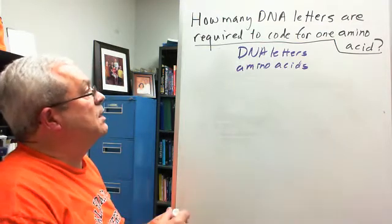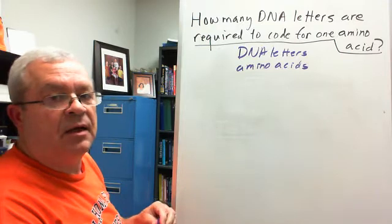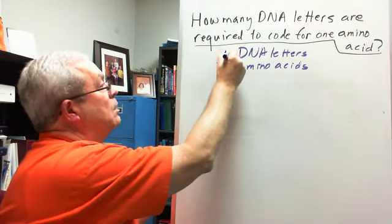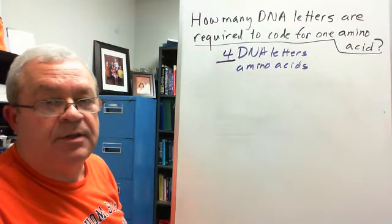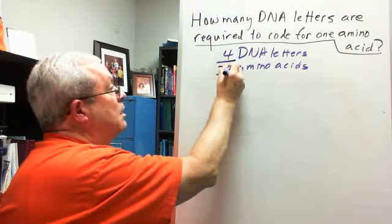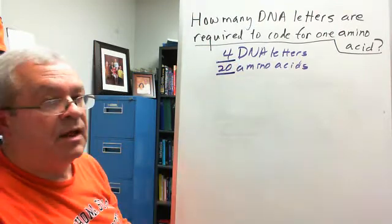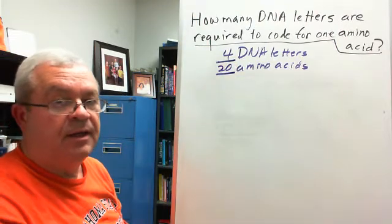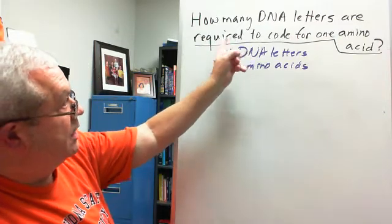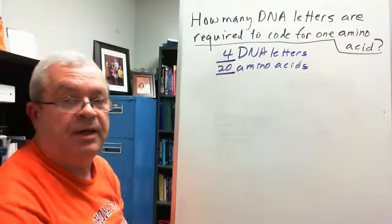And so what do we got here? How many DNA letters? How many different DNA letters? A whopping four. And how many different amino acids? Twenty. And so the DNA code involves four DNA letters coding for twenty different amino acids. So back to the question. How many DNA letters are required to code for one amino acid?